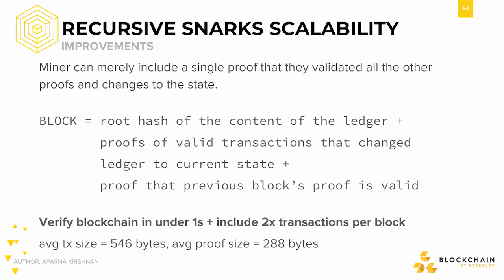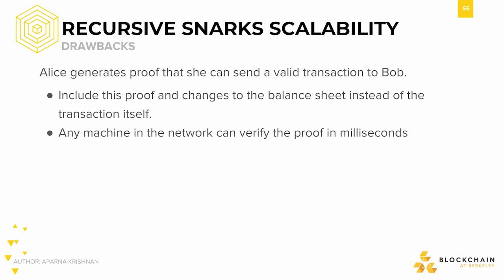The average transaction size, as we saw earlier, was 546 bytes. Compare this with the average proof size, which is around 288 bytes. To close, back to Alice and Bob: Alice generates a proof that she can send a valid transaction to Bob, includes this proof along with changes to a balance sheet instead of including a transaction, and any machine in the network can verify the proof in milliseconds.